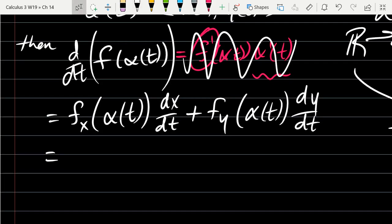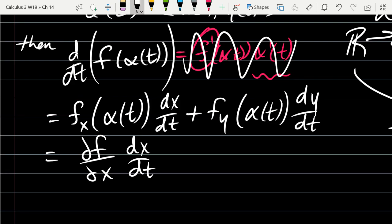And you can write this as df/dx times dx/dt, and yes, the df/dx is partial because there's two inputs to the f function.